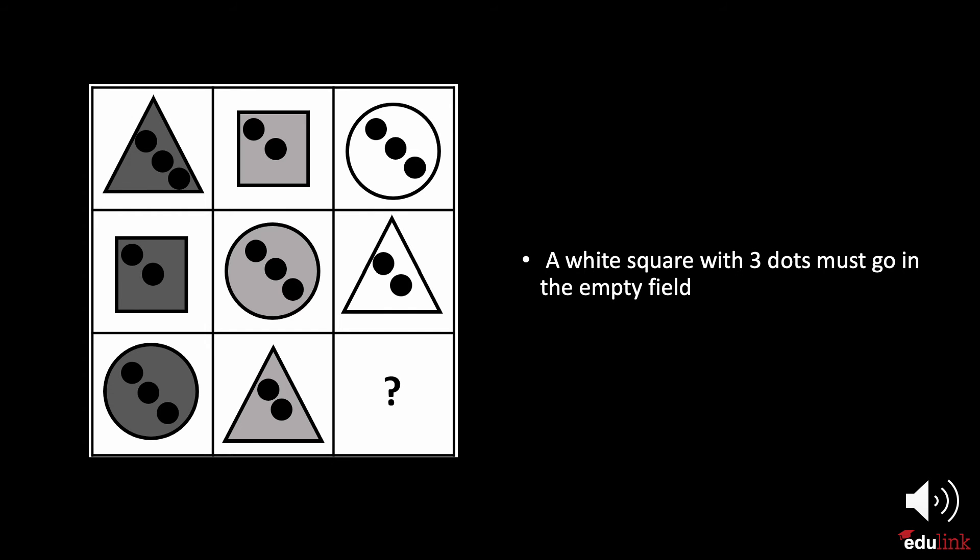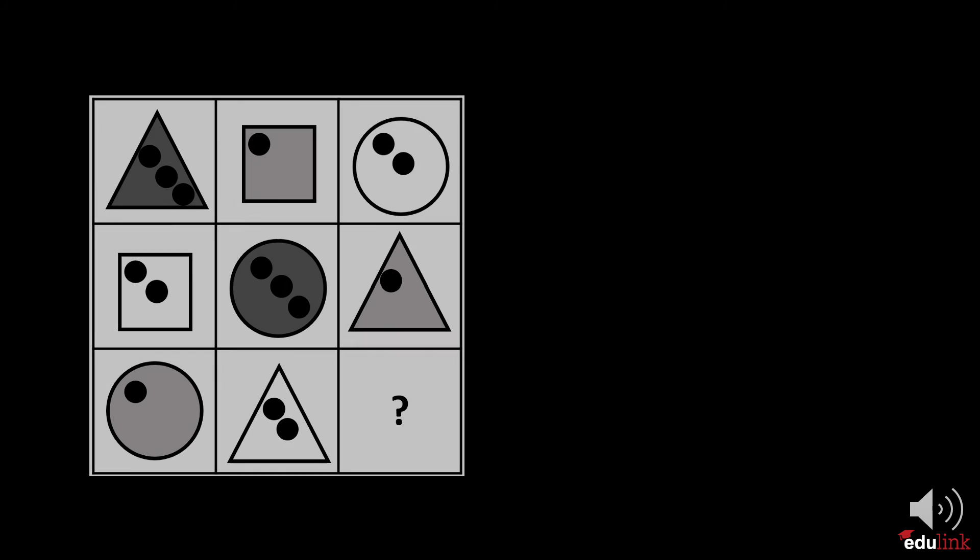Therefore, the empty field must be filled with three dots in an unshaded white square. Now let's try mixing the three variables. First, you should identify the three variables.